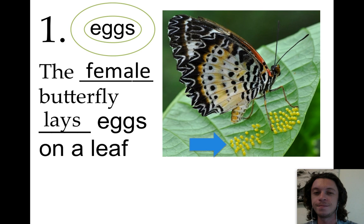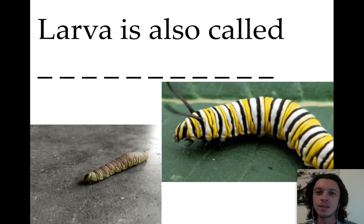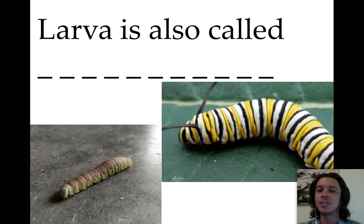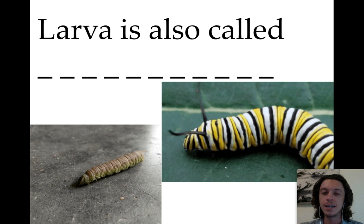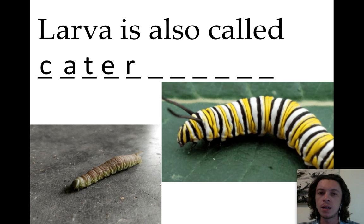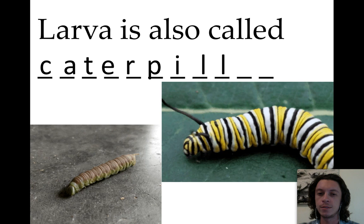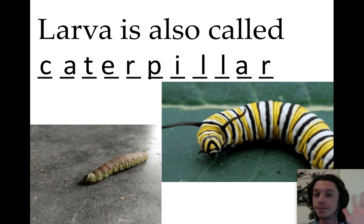Step two. Larva. Larva is also called caterpillar. How do you write caterpillar? C-A-T-E-R-P-I-L-L-A-R. Caterpillar — same as larva.